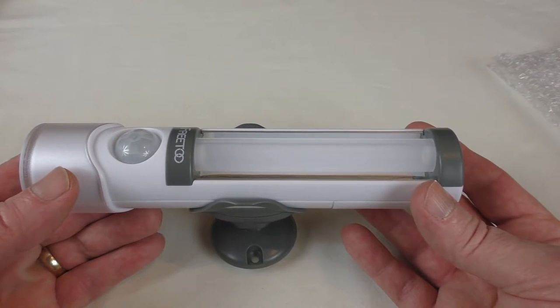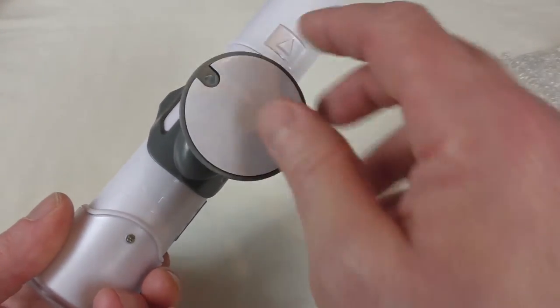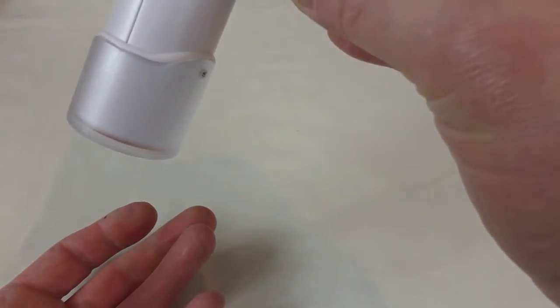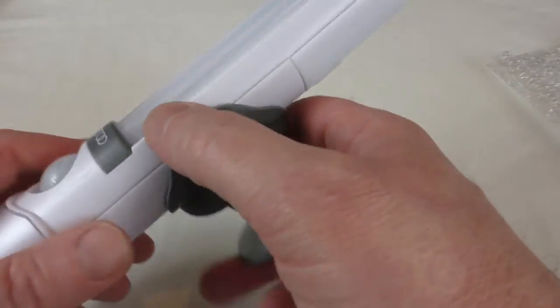But once you get those batteries in, I think that 3M sticky bit would probably struggle to keep it solid to be honest, so it's a good job that the screw holes are there for it.